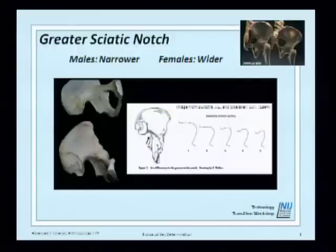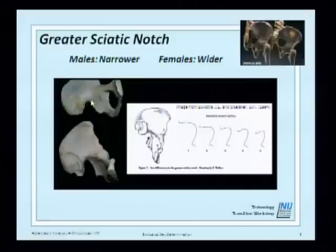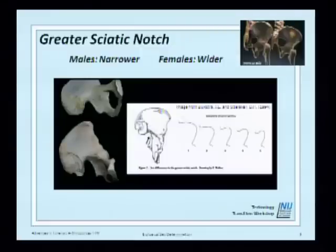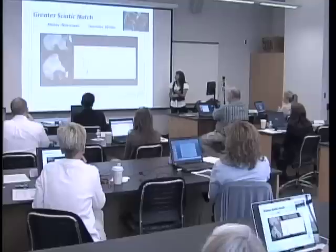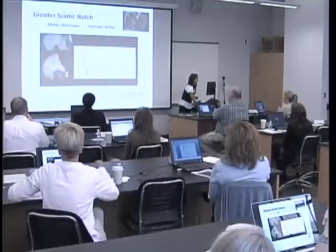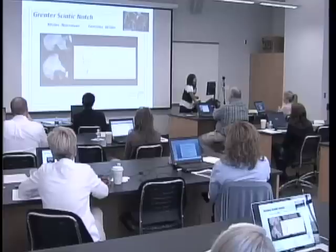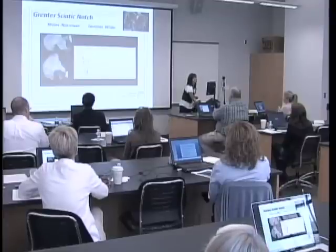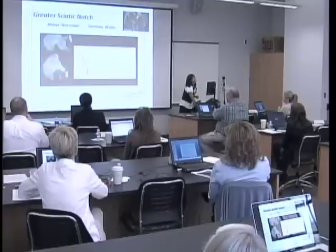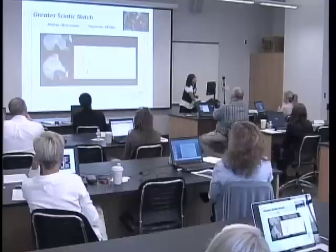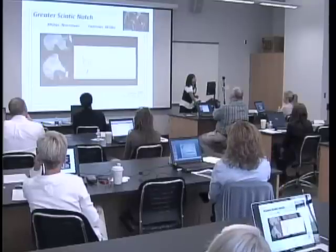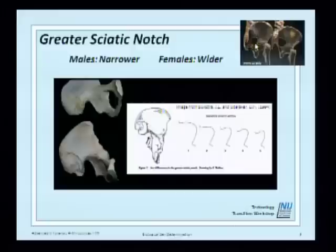One commonly used feature is the greater sciatic notch. We use a set of standards by Buikstra and Ubelaker that shows a range of width, and we choose from one to five, whether it's female, intermediate, or male. The wider it is, the more likely it is to be female; the more narrow, the more likely male — related to childbirth. You can see in this picture that the female has a much wider greater sciatic notch than the male.